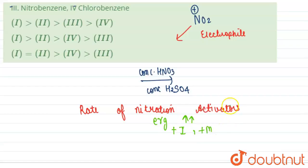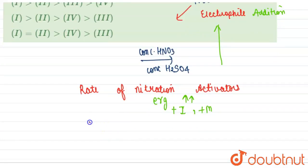That means electron releasing groups will increase the rate. In other words, groups that show plus I, plus M effect are activators for the addition of electrophile. Groups that show minus M, minus I are electron withdrawing groups.